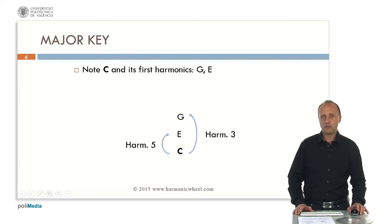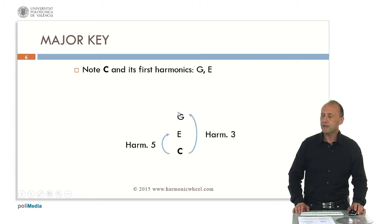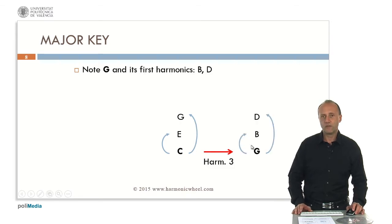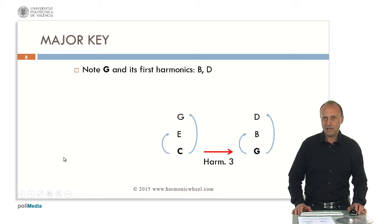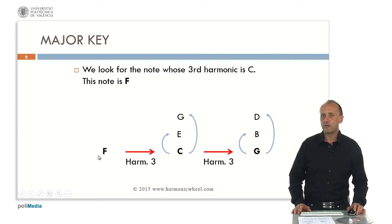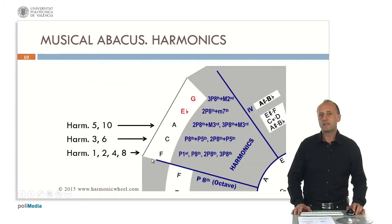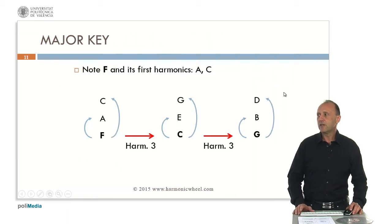We can summarize what we did so far. We started with note C, we found its first harmonics G and E, then we chose the most important note from C, which is G, and we looked for its first harmonics, D and B. Now we can repeat the process, starting with a note lower than C such that its third harmonic is C — that note is F. If we look for its first harmonics, we find F, C, and A. Now here we have a set of notes: apparently they are nine, but two of them are repeated, so they are actually seven notes.